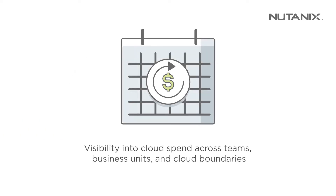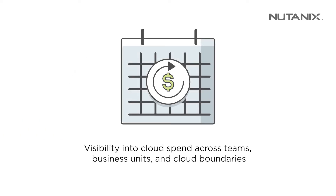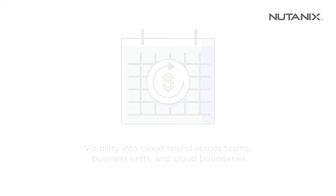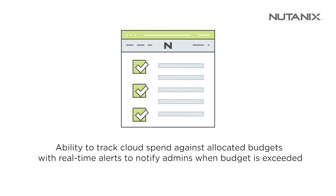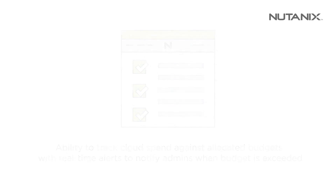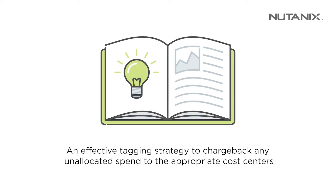They need visibility into the cloud spend across teams, business units, and most importantly, cloud boundaries. They need the ability to track cloud spend against allocated budgets with real-time alerts to notify admins when budget is exceeded. They also need an effective tagging strategy that makes it easier to charge back any unallocated spend to the appropriate cost centers.